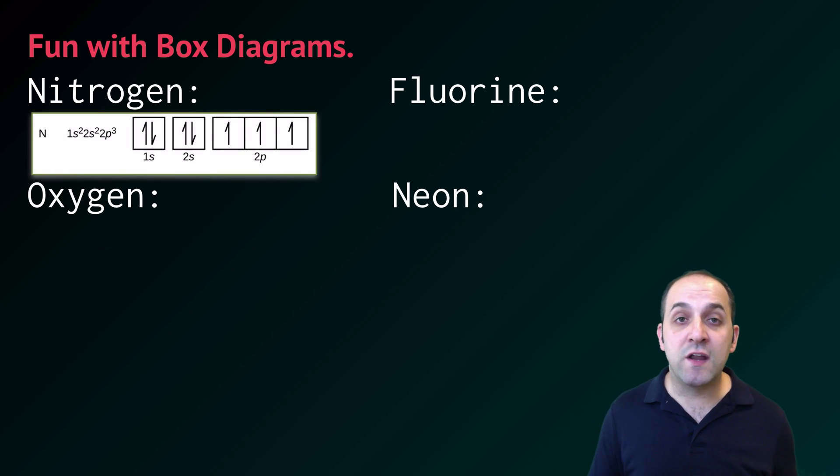So nitrogen is going to continue the trend that we saw with carbon. We're going to put that fifth second principal energy level electron into the open p orbital by itself. Once we've done that, we now start pairing up.